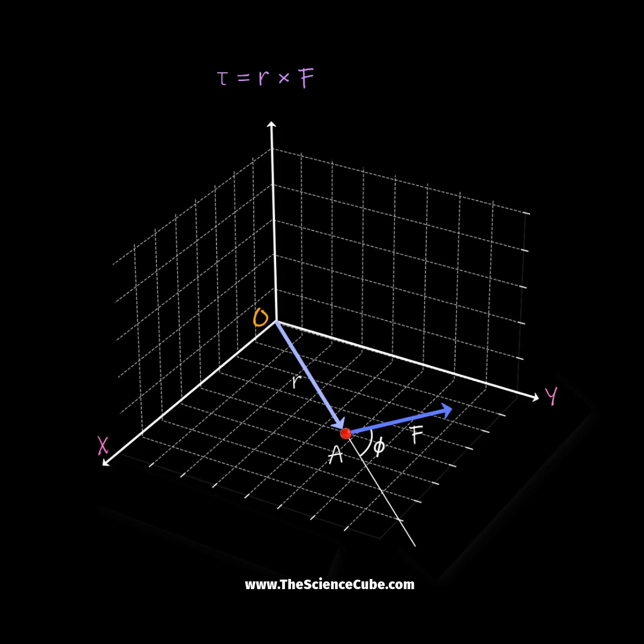We are quite familiar with how we find the direction of torque. We slide the vector F without changing its direction until the two vectors are tail to tail.